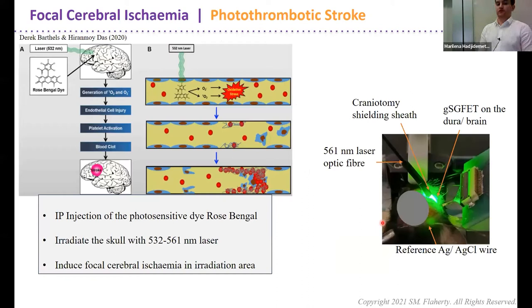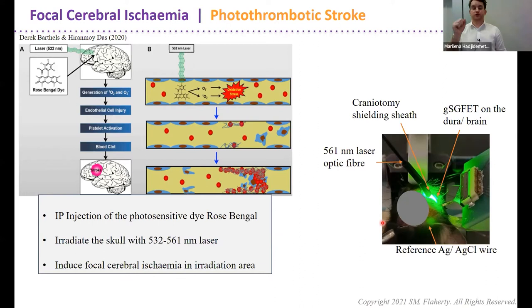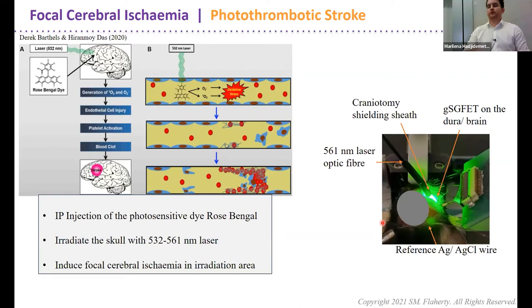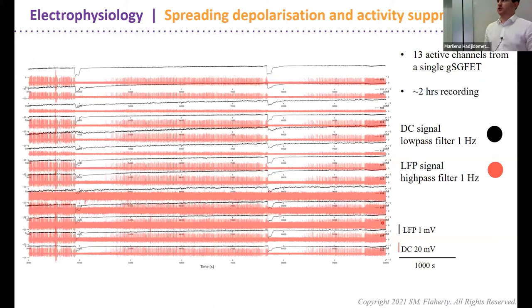I'm using this technology in a stroke model — specifically the photothrombotic stroke model — to map how spreading depolarizations propagate across the tissue from the ischemic penumbra. The photothrombotic stroke model involves an IP injection of rose bengal; you then irradiate the skull in the area you want to cause the stroke with a laser of a particular wavelength, which induces cerebral ischemia. We use this model because we can control the parameters — we know exactly where we're irradiating and can control the infarct size.